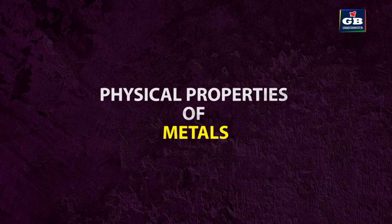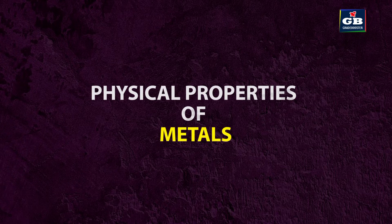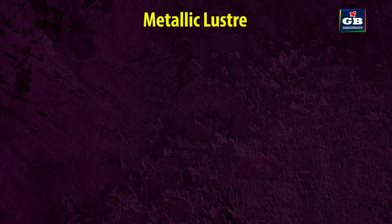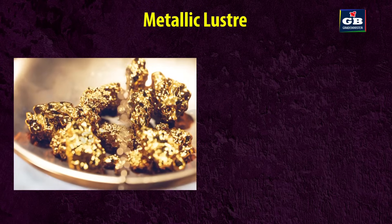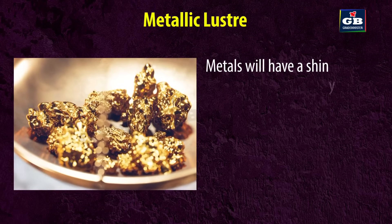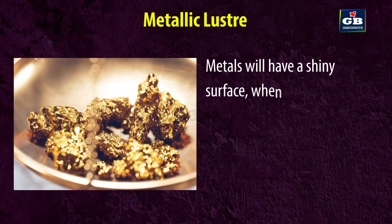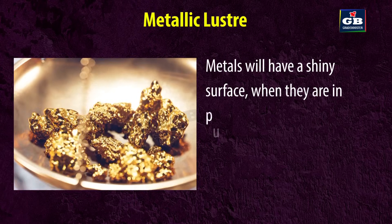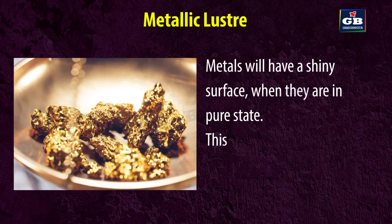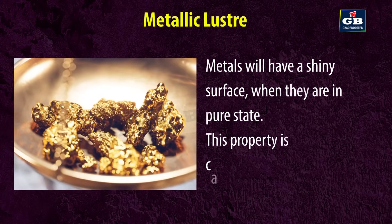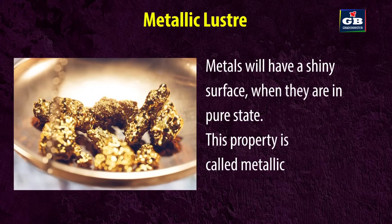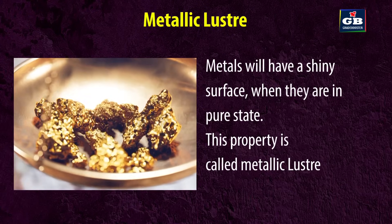Physical properties of metals. Property 1: metallic luster. Metals have a shiny surface when they are in a pure state. This property is called metallic luster.